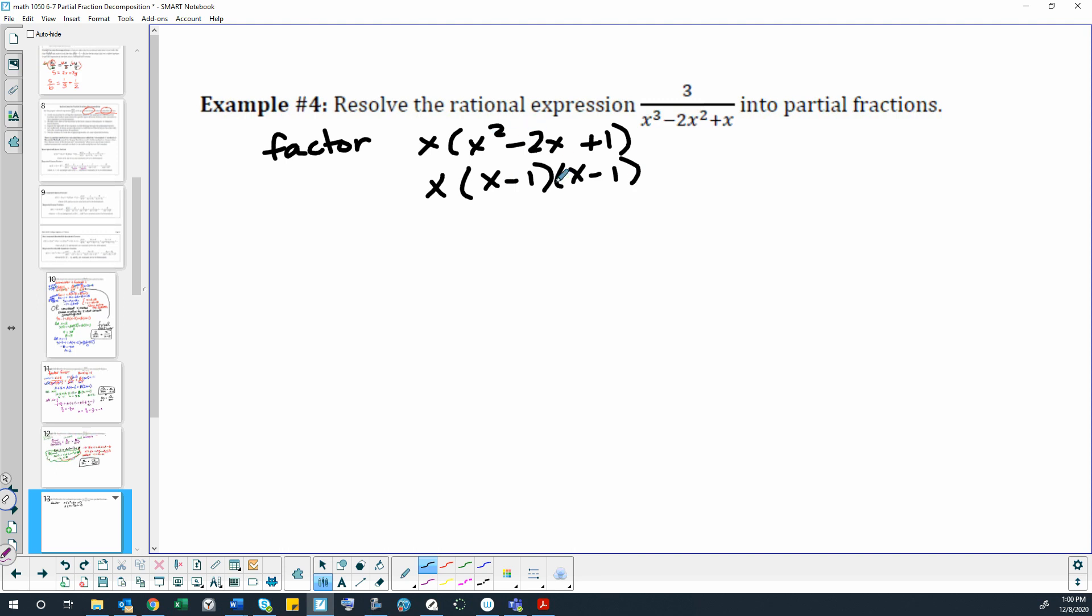Double check it. x times x is x squared, negative 1 times negative 1 is 1, negative 1x, negative 1x add up to negative 2x in the middle. So another way of looking at this is we have two linear factors and one of them is a repeated factor.